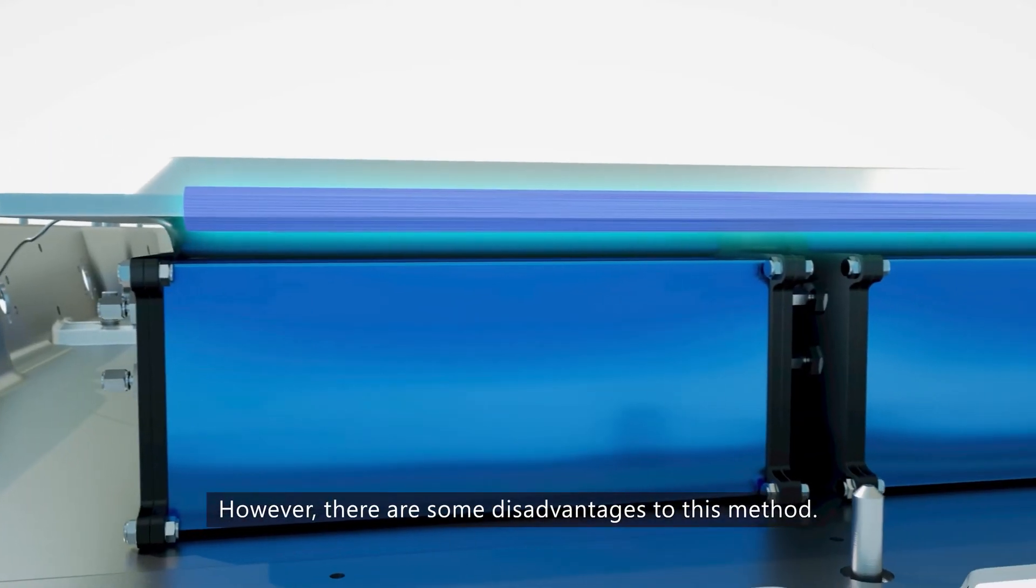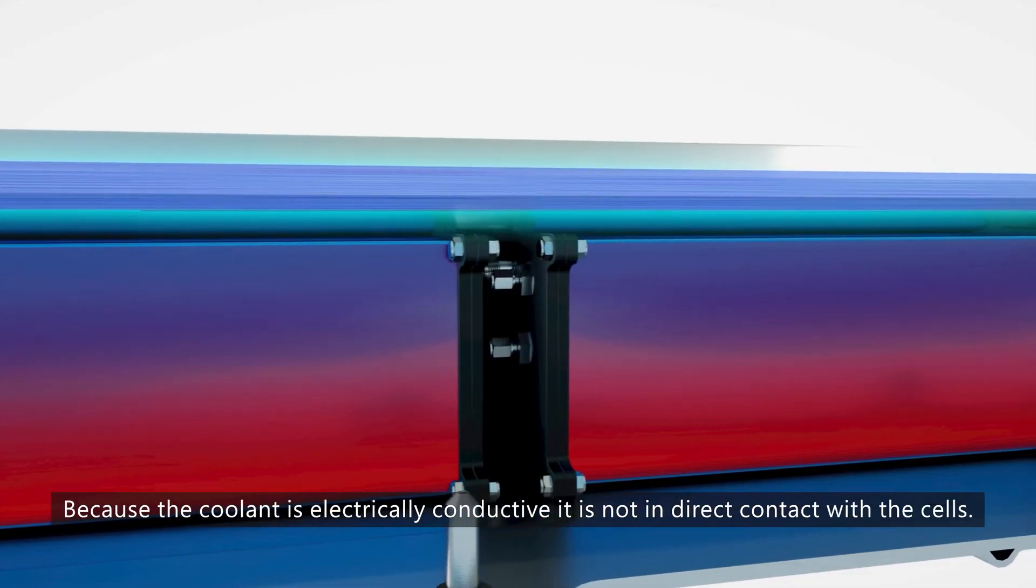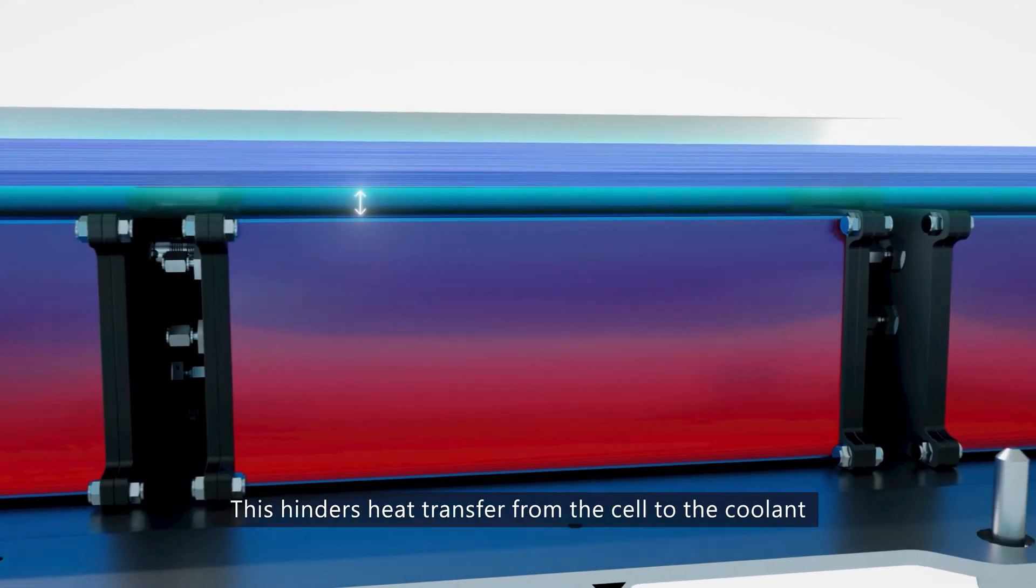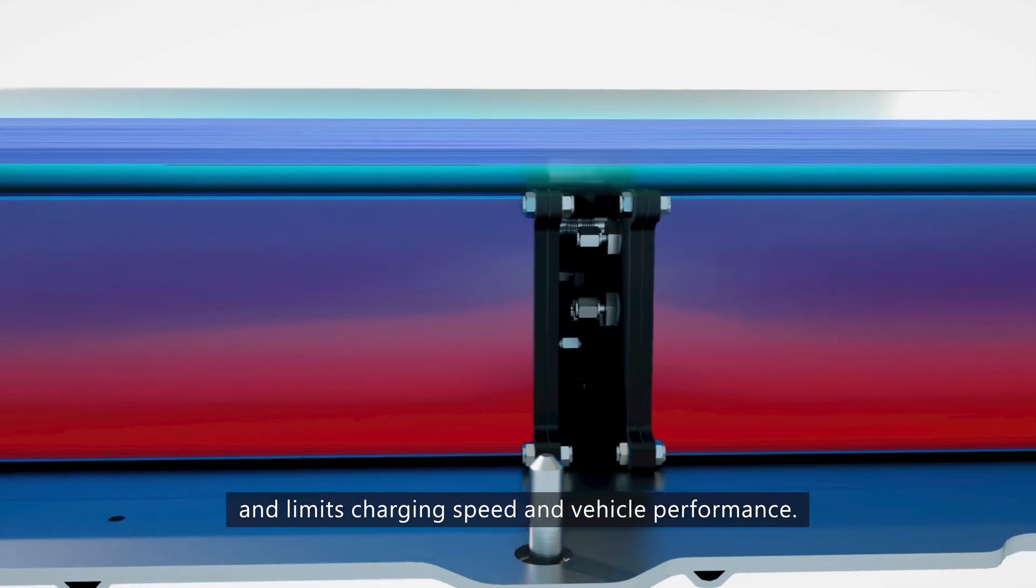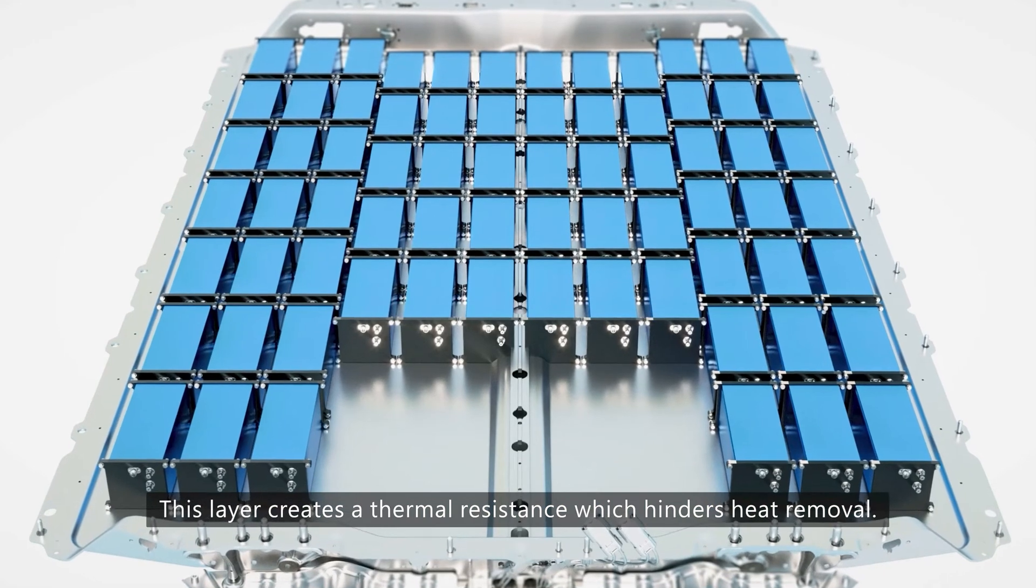However, there are some disadvantages to this method. Because the coolant is electrically conductive, it is not in direct contact with the cells. This hinders heat transfer from the cell to the coolant and limits charging speed and vehicle performance. This layer creates a thermal resistance which hinders heat removal.